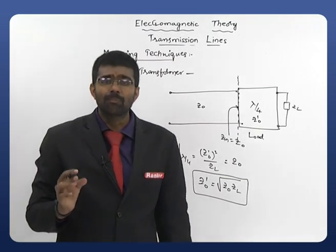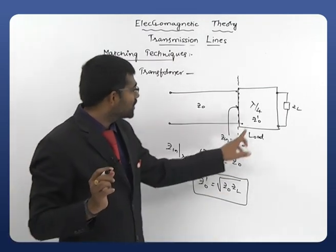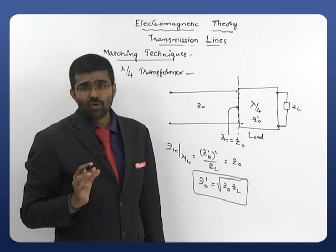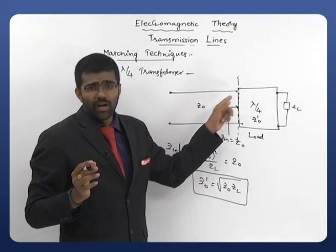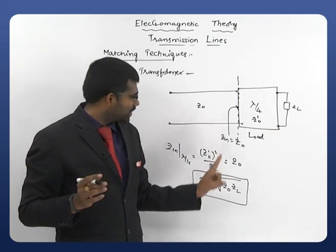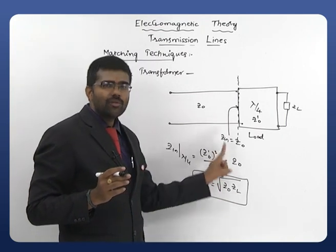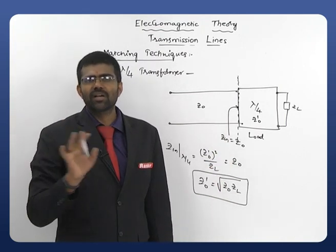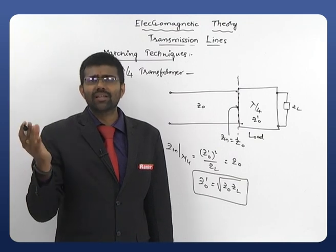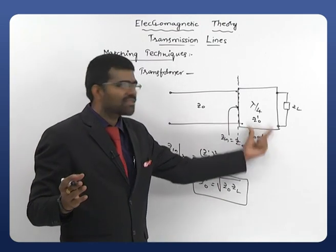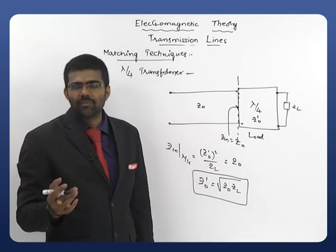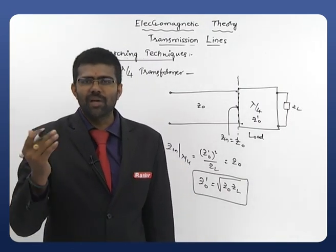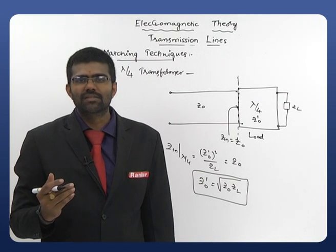This is a very simple technique, but obtaining the required Z0' is a little difficult because you may have different loads and it is fixed. Once calculated for a particular load, it is useful for that load only, not for others. If you use any other load, you need to change this lambda by 4 transformer again and again. This is a difficult task, so we go for another matching technique called stub matching.